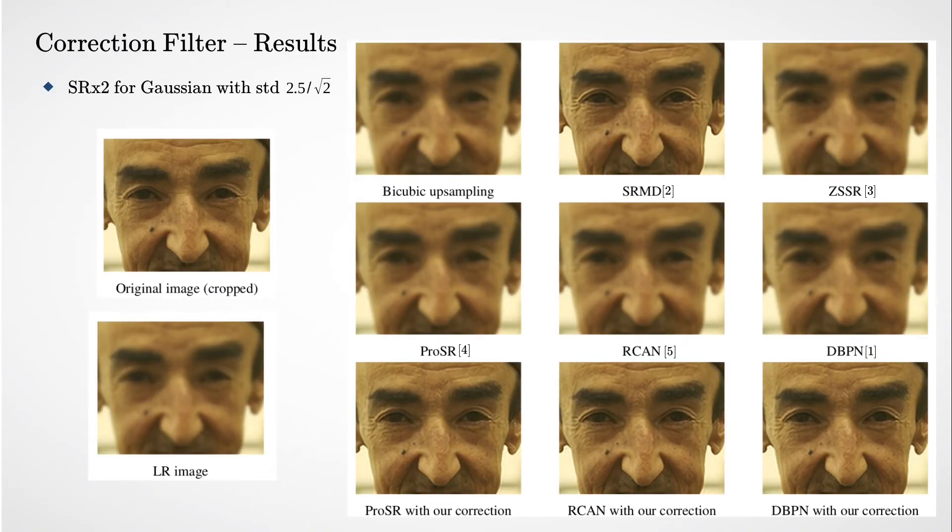Here we can see an example that demonstrates the promise of our method. We downsample an image using Gaussian blur, then apply three different state-of-the-art super-resolution networks trained with a bicubic kernel: PROSR, ARCAN, and DBPN. It can be seen that their performance is quite poor.